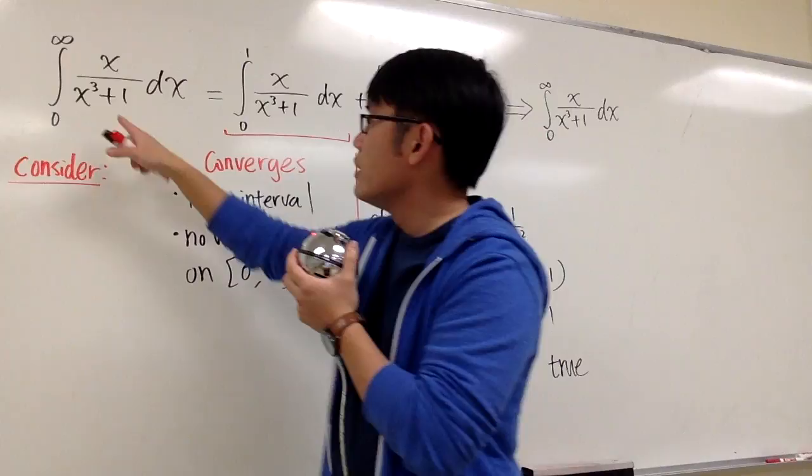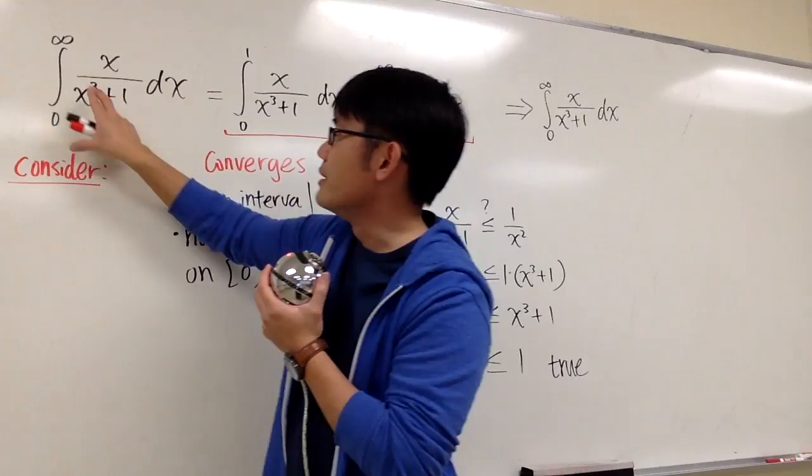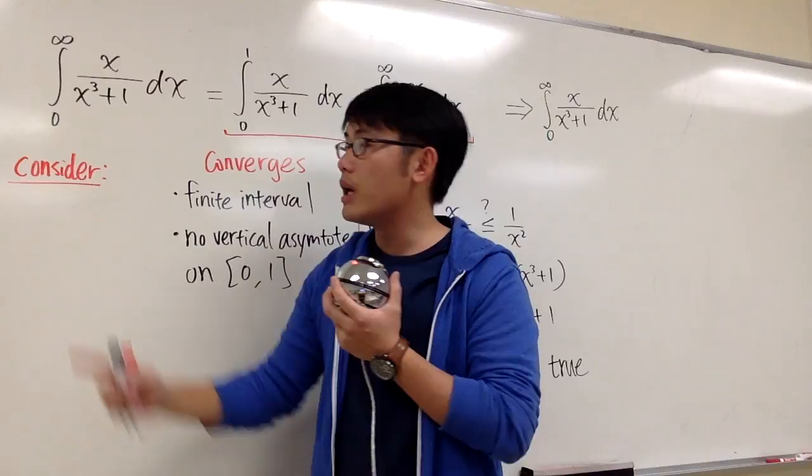We see that we have a vertical asymptote when x is equal to negative 1, but negative 1 is not inside of this interval. So this is only the type 1 situation of the improper integral. However, this integral is actually kind of hard to integrate directly, so let's not do that.